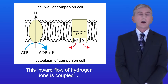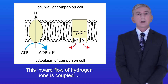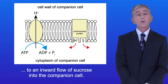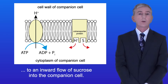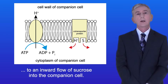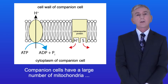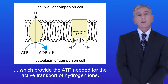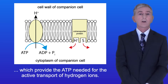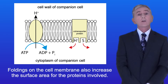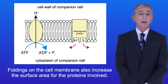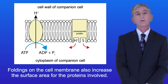This inward flow of hydrogen ions is coupled to an inward flow of sucrose into the companion cell. Companion cells have a large number of mitochondria which provide the ATP needed for the active transport of hydrogen ions. Foldings on the cell membrane also increase the surface area for the proteins involved.